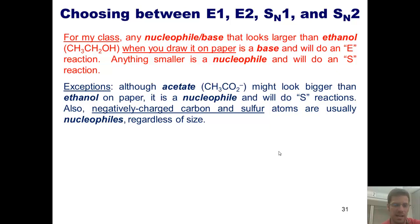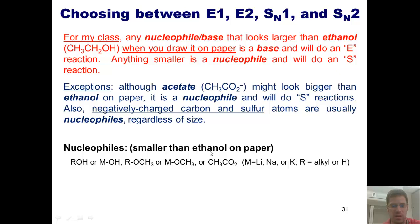Back to our lineup. Nucleophiles that are smaller than ethanol on paper are things like this. They will favor substitution reactions either SN2 or SN1, depending on whether or not they're strong or weak. Bases, in contrast, are molecules that look on paper larger than ethanol. They will favor eliminations.